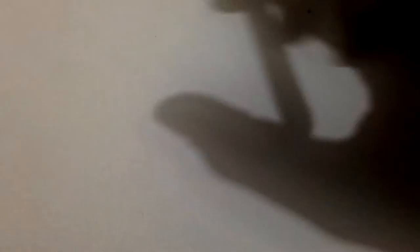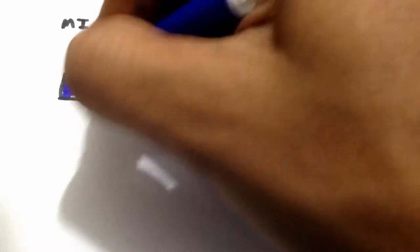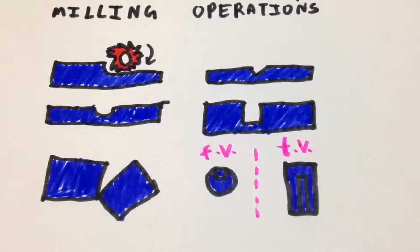A milling machine can carry out a lot of operations including plane milling, angular milling, form milling, slot or groove milling, saw milling or slitting, and keyway milling.